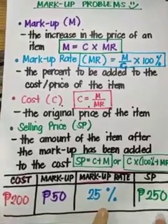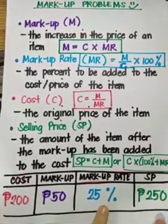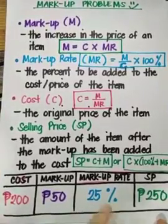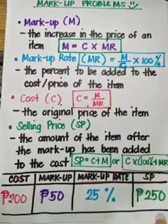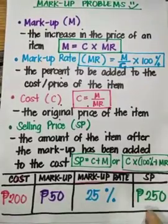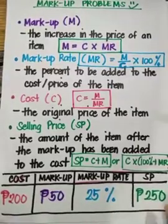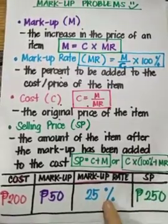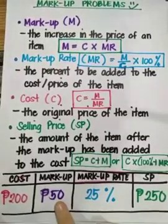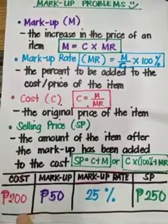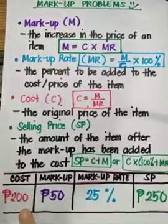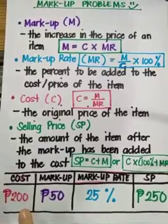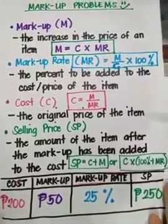25% is the markup rate. So when you sell the product or the t-shirt, you will sell it for 250, because you already added the 25% markup, which is 50, to the original cost of the t-shirt, which is 200.